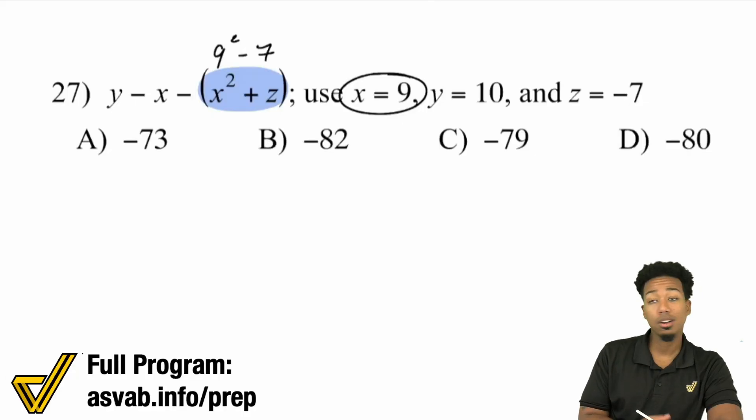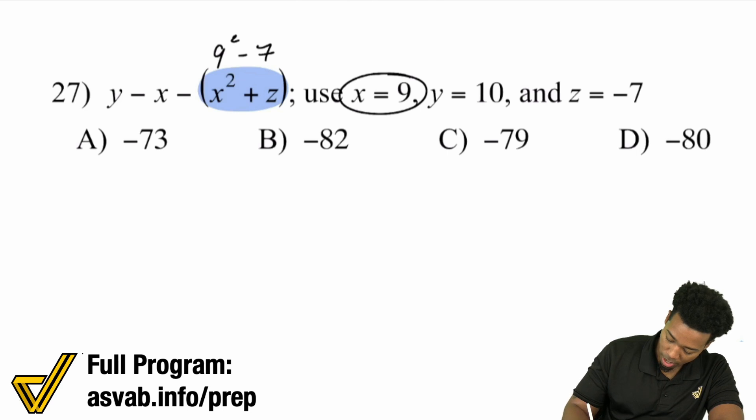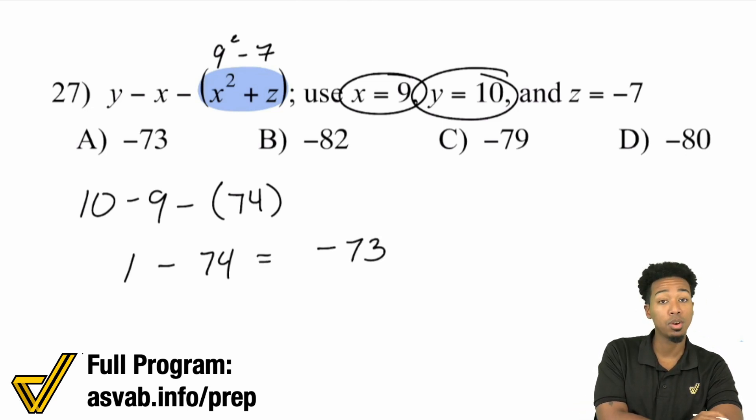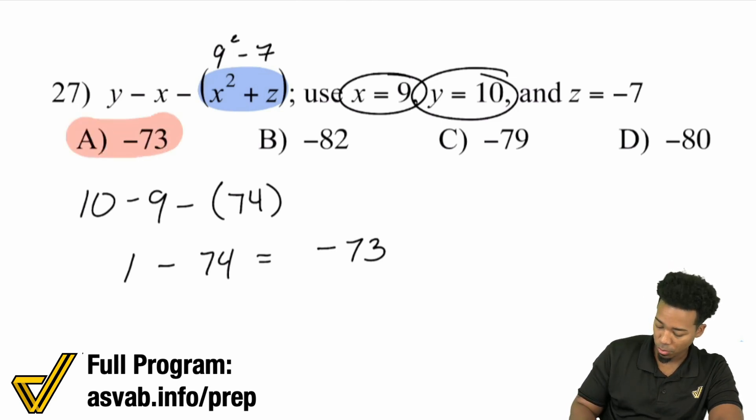So 9 squared is 81, 81 minus 7, that's going to be 74. So we have 74 there. And then we have Y, which is over here, 10 minus X which is 9, minus all of that. So 10 minus 9 is 1. One minus 74 is negative 73, because 74 minus 1 is 73 but it'll be negative because you're subtracting too much. So negative 73.